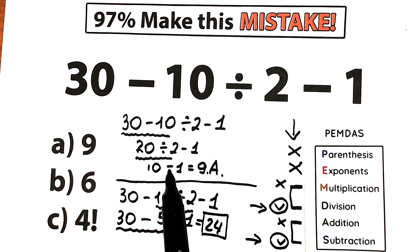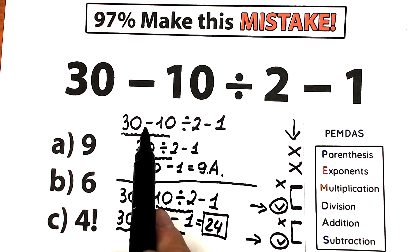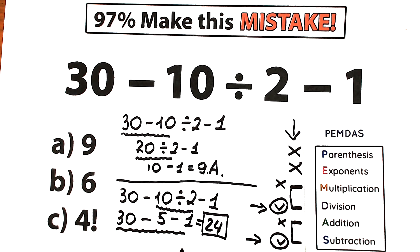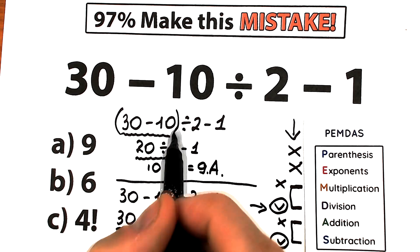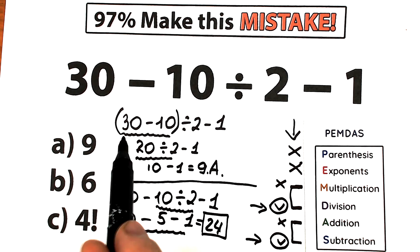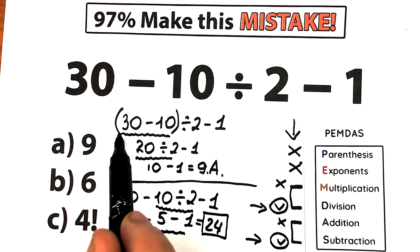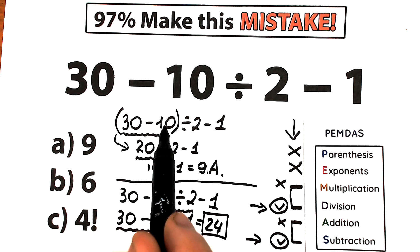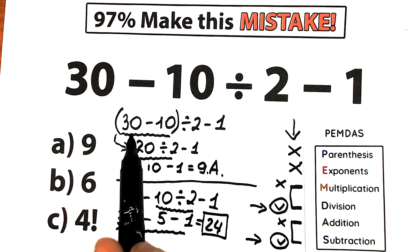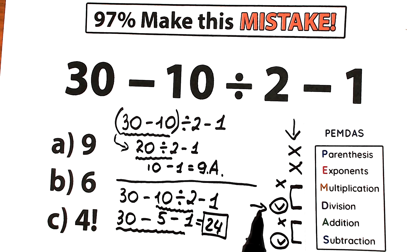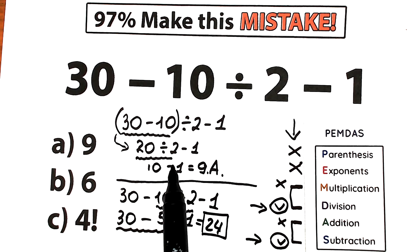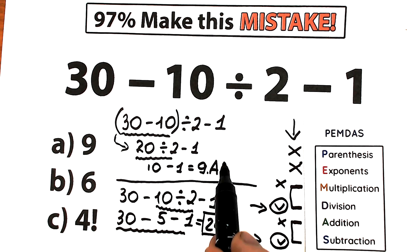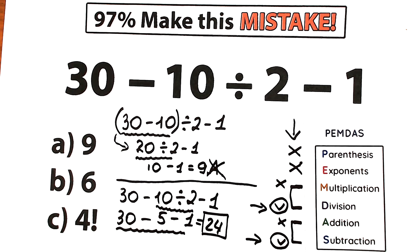This left-to-right solution is very bad — we can't subtract first and then divide. That is a wrong approach. Of course, with parentheses, the question would change, because parentheses is our first step. With parentheses around (30 minus 10), we'd get 20, and then possibly arrive at 9 — but in our case we don't have any parentheses, so we forget about option A, which is absolutely wrong.